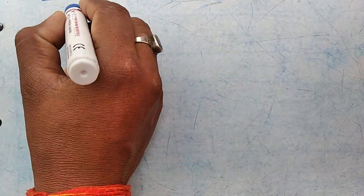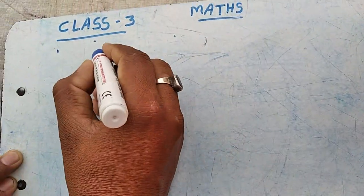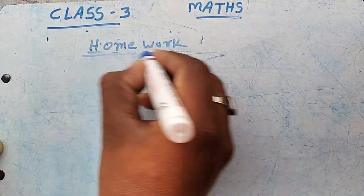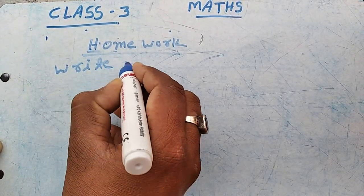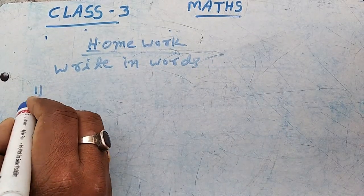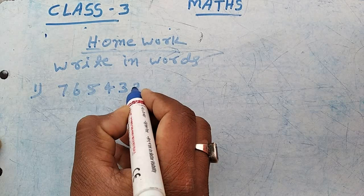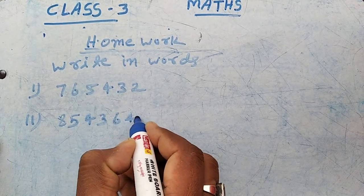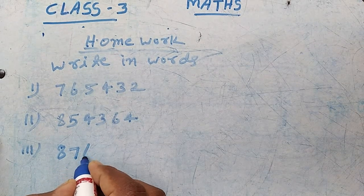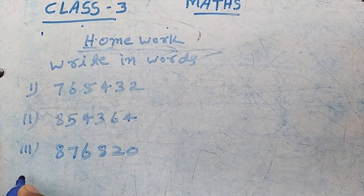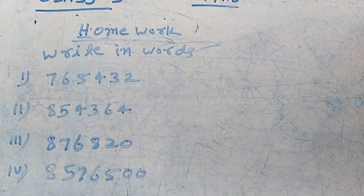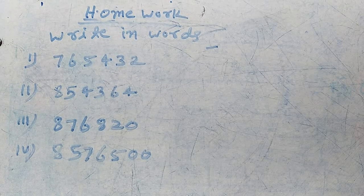Now for homework: Write in words — W-R-I-T-E in W-O-R-D-S. Question 1: 765,432. Question 2: 85,43,64. Question 3: 87,68,20. Question 4: 85,76,75,0. Do this homework.